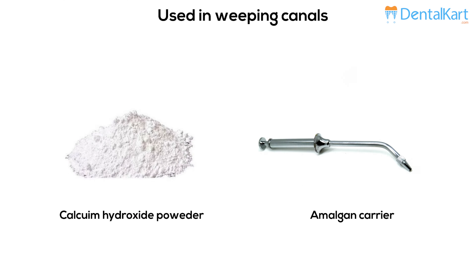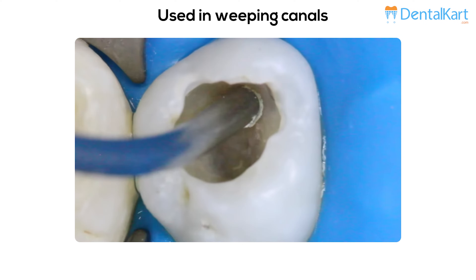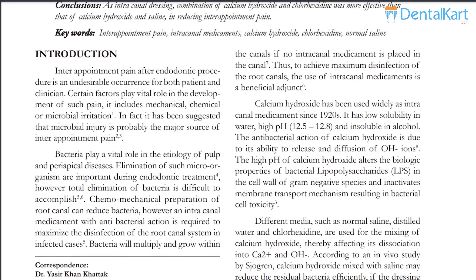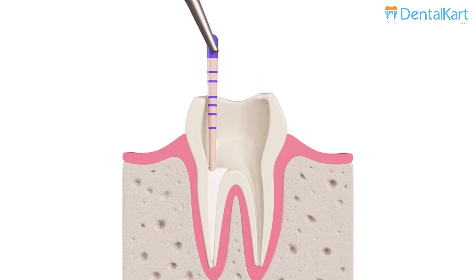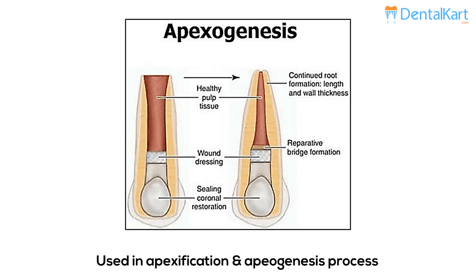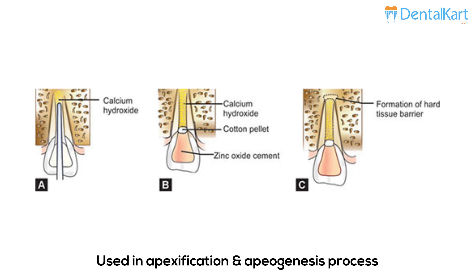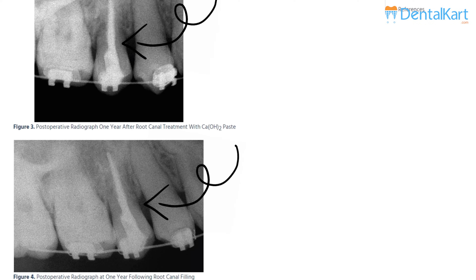Walden calcium hydroxide dry powder is used in weeping canals. It is used as an inter-appointment intracanal medicament and as an endodontic sealer. It is also used in apexification and apexogenesis processes, and in cases with root resorption.